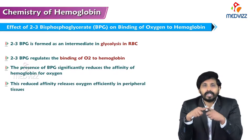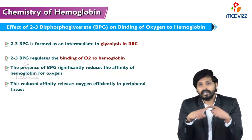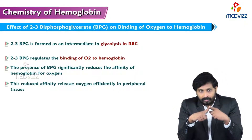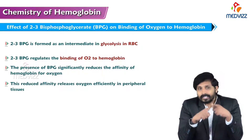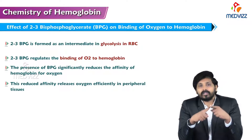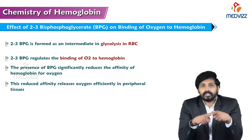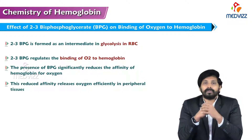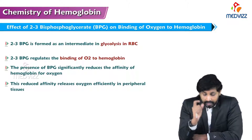If ATP is generated with the help of the ETC, that is known as oxidative phosphorylation. Here, ATP is generated at the substrate level within the pathway, which is why it is called substrate-level phosphorylation. So there is a reduction in energy production by producing 2,3-BPG especially in RBCs.